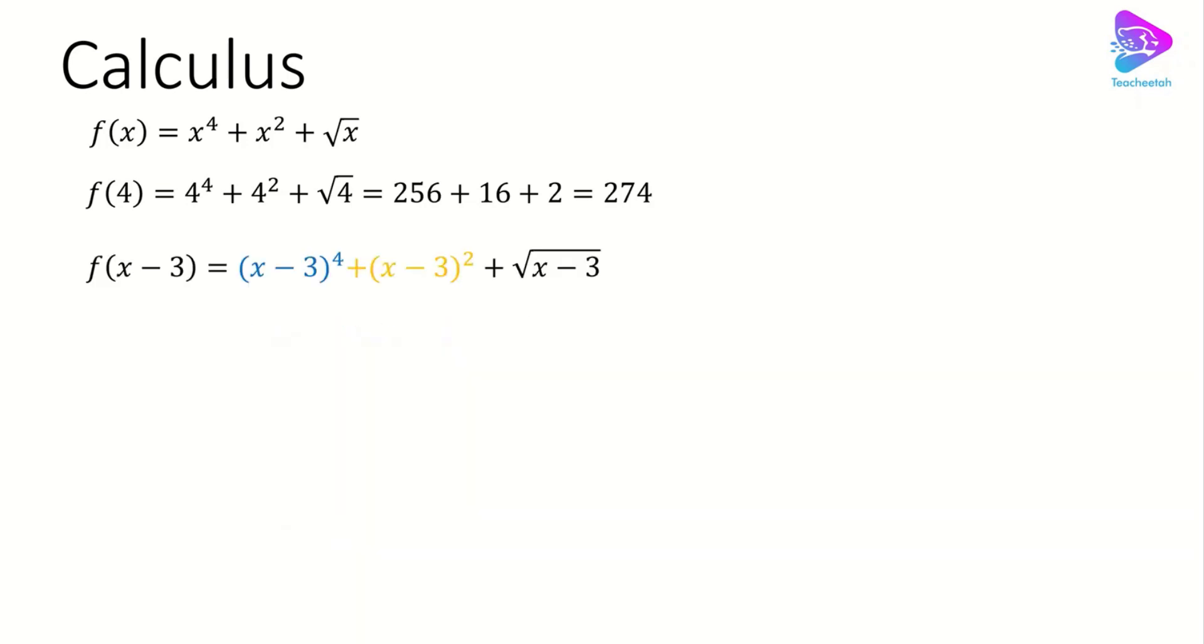The other example we have x minus 3, and we want to evaluate the function at x minus 3. So the only thing that we have to do is just plug in x minus 3 instead of x, so it's going to be (x minus 3) to the power of 4 plus (x minus 3) to the power of 2 plus square root of (x minus 3).